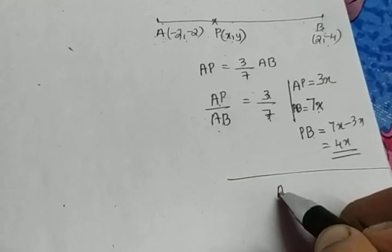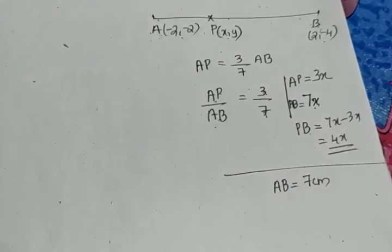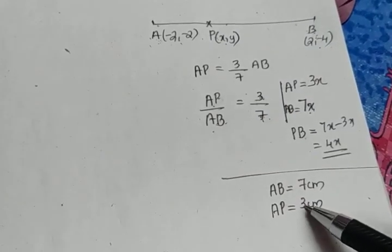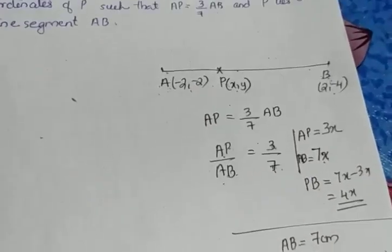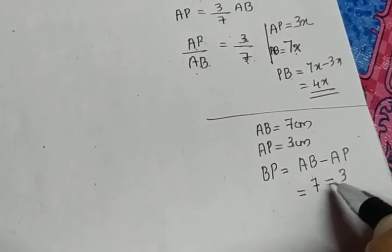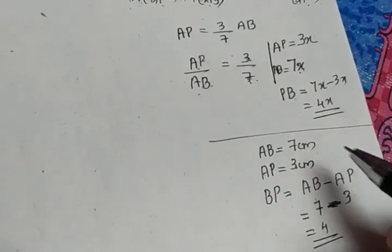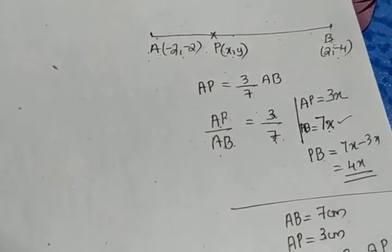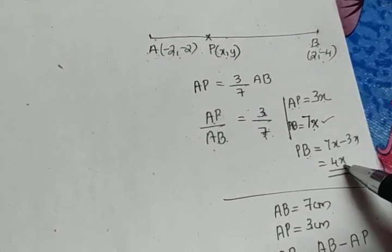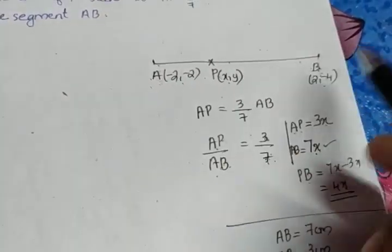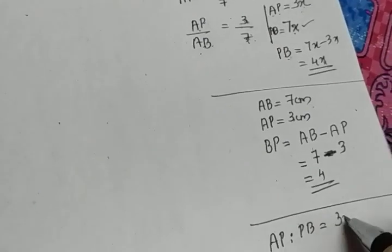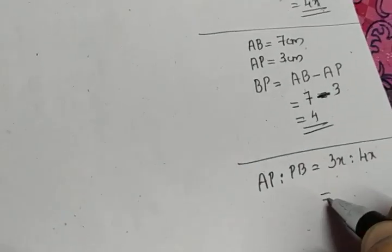For example, suppose AB is 7 centimeters. Then AP will be 3 centimeters, since the ratio AP to AB is 3 to 7. BP equals AB minus AP, so 7 minus 3 gives 4 centimeters. Instead of 7 centimeters we take AB as 7X, so AP becomes 3X and PB becomes 4X. The ratio we require is AP to PB, which is 3X to 4X.